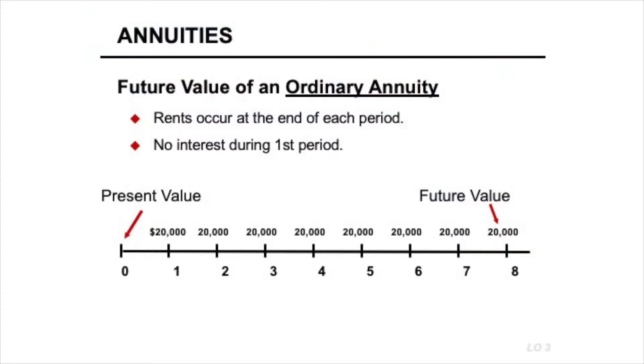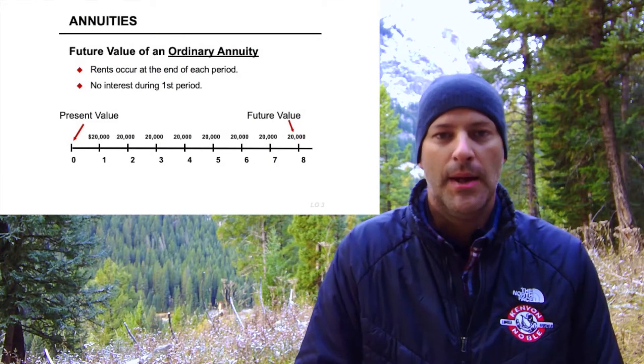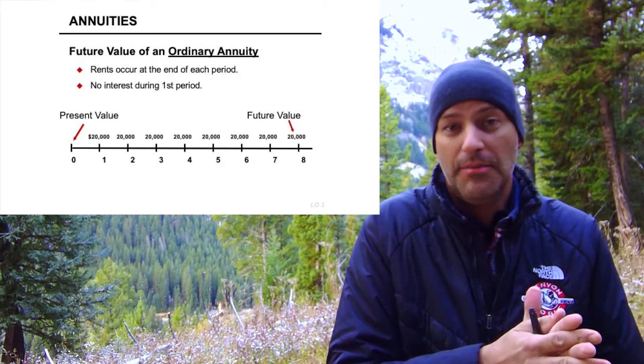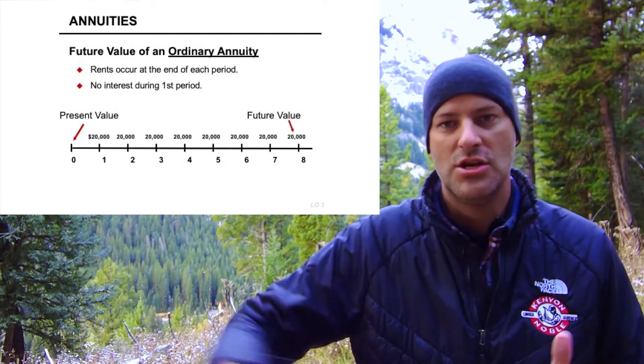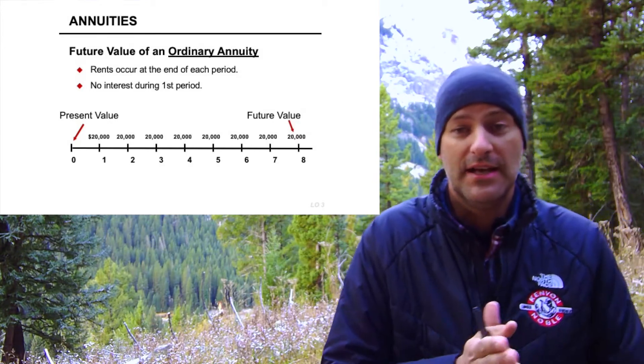I'm less concerned with annuity due — it's important to know it exists, but from a conceptual understanding of how time value works, the annuity due is just a special case. I'm more interested in you understanding what an annuity is, when we apply annuities, and roughly how we calculate them. Starting with future value of an ordinary annuity — the rents start at the end of the first period — so if it's twenty thousand dollars, what's the present value or future value of receiving twenty thousand dollars a year for the next eight years?